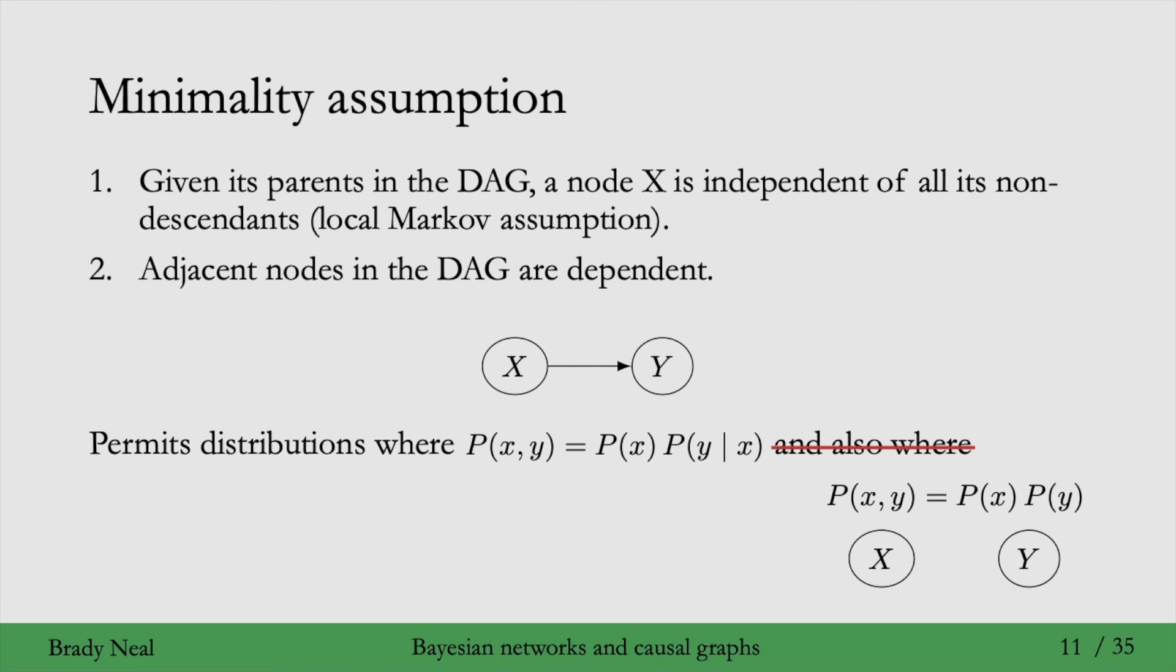You can think of the minimality assumption as just giving us a way to select which of those graphs we're going to use to represent this fully factorized distribution. It means that we're going to use the graph that has the minimal number of edges that this distribution is Markov with respect to. Okay, so you can think of this minimality assumption as kind of like expressing our preferences for what kinds of graphs we'll use to describe different distributions.